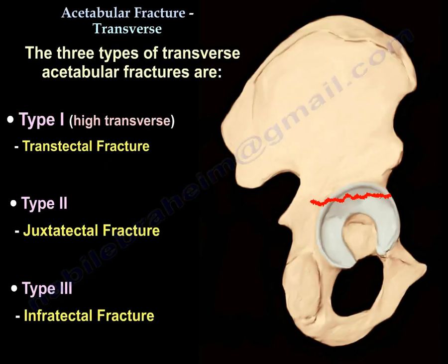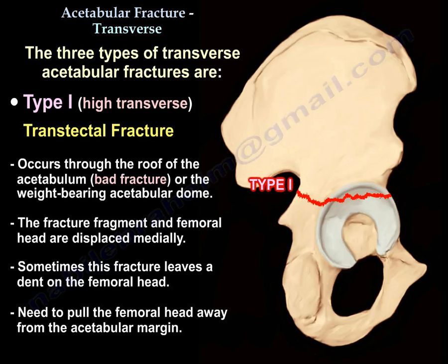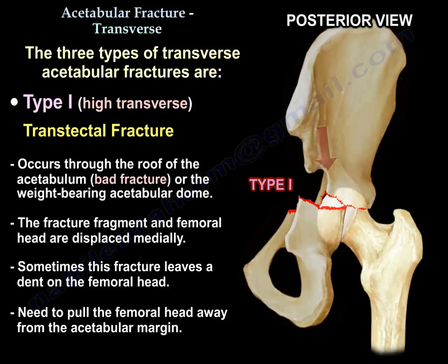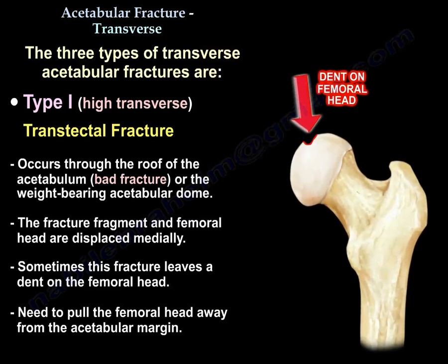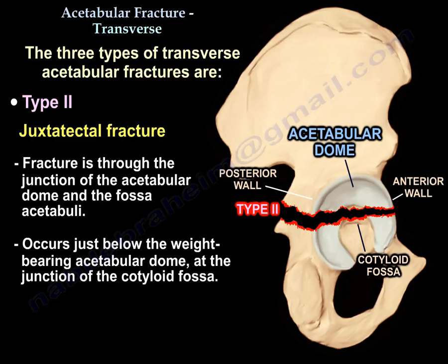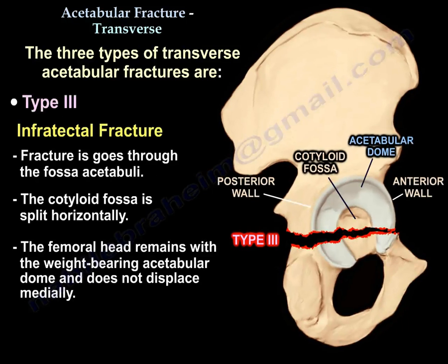There are three types of transverse fracture. The first is the high transverse or transtectal type, which occurs through the roof of the acetabulum — this is the most severe and can leave a dent on the femoral head, requiring the femoral head to be pulled away from the acetabular margin. The second type is juxtatectal, where the fracture passes through the junction of the acetabular dome and the acetabular fossa. The third is infratectal, where the fracture goes through the acetabular fossa; the fossa is split horizontally and the femoral head remains with the weight-bearing acetabular dome without medial displacement.